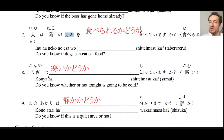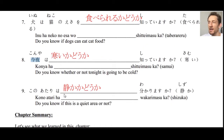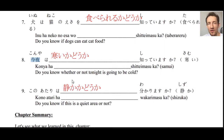Number eight: 今夜は寒いかどうか知っていますか？ — Do you know whether or not tonight is going to be cold? 今夜 uses the characters for 'now' and 'night,' meaning 'tonight.' Number nine: この辺りは静かかどうかわかりますか？ — Do you know whether or not this area is quiet? 静かかどうか.